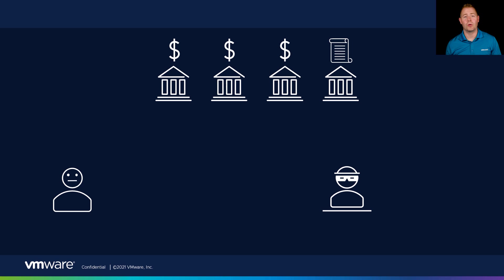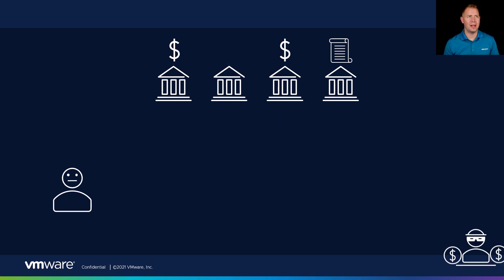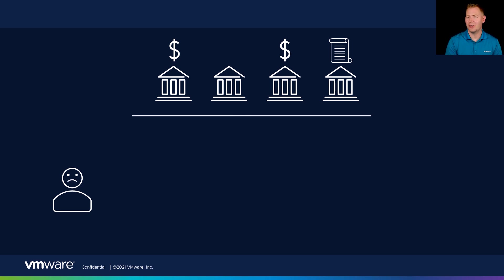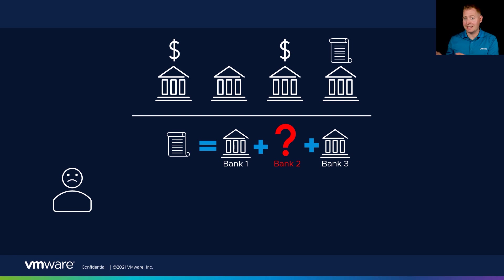Now let's say one day a robber comes along and they steal the money from bank two. Bank two didn't do a great job with their accounting, so they come to me and say we've lost some of your money — we just don't know how much. Luckily, I've got my ledger in the fourth bank. I can go back and say bank one should have this amount, bank three should have this amount, my ledger says this, so bank two is missing this amount. That's a little bit how RAID 5 works.